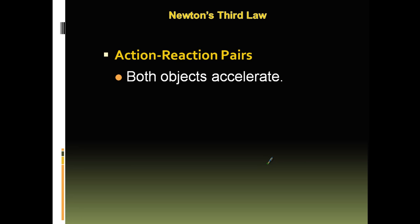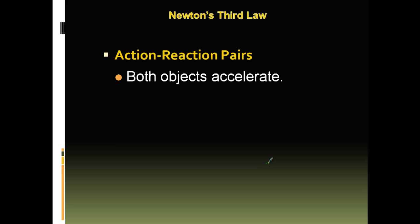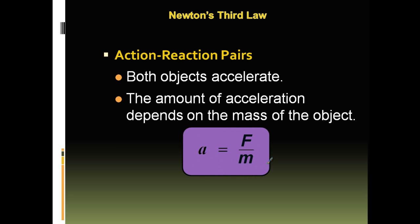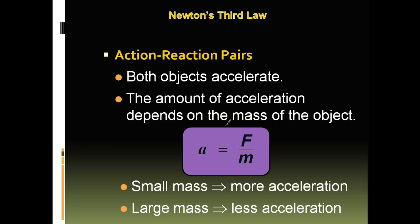In action-reaction pairs, both objects are going to accelerate. The amount of acceleration depends on the mass. A small mass means more acceleration, and a large mass means less acceleration. We can say that acceleration is inversely proportional to mass, or acceleration is proportional to 1 over the mass.